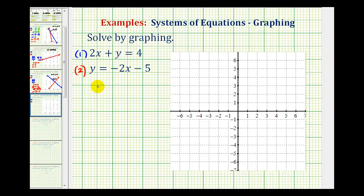Remember, slope-intercept form is the form y equals mx plus b, where b is the y-intercept, and m is the slope of the line.